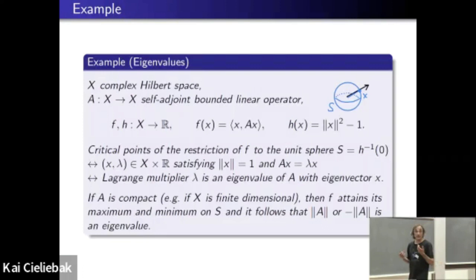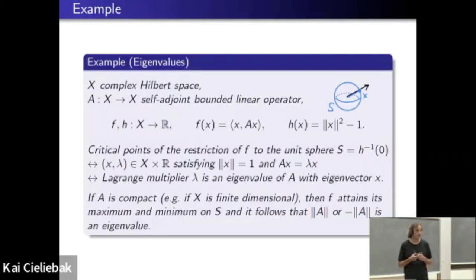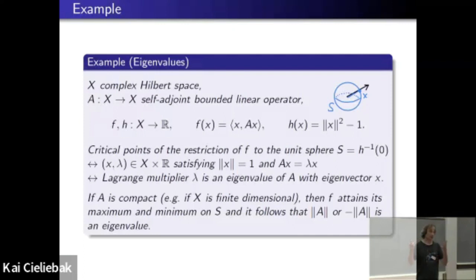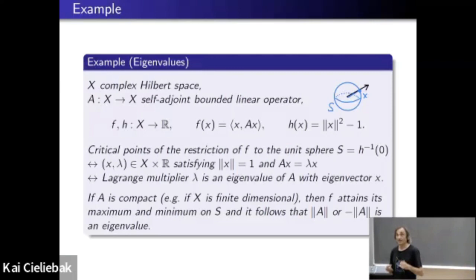Here's one example many of you will have seen. Suppose we start with a complex Hilbert space x, and A is a bounded self-adjoint operator. As a function f, we take the quadratic form associated to A, and h is just the norm of x squared minus one — so the constraint h = 0 means the norm of x equals one. If you write down the critical point condition for capital F, you find exactly the eigenvalue equation: A times x equals λ times x. So this variable λ, introduced as an artificial new variable, actually acquires meaning — it is precisely an eigenvalue of the linear operator A.